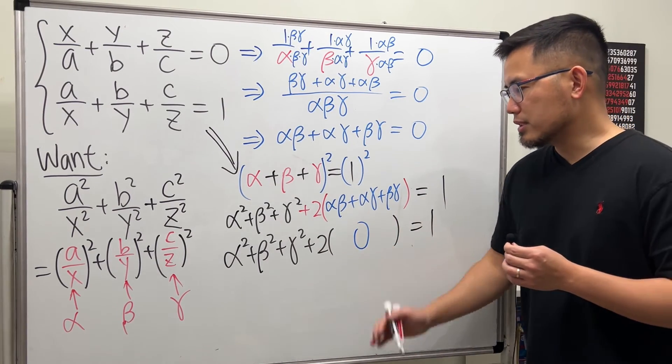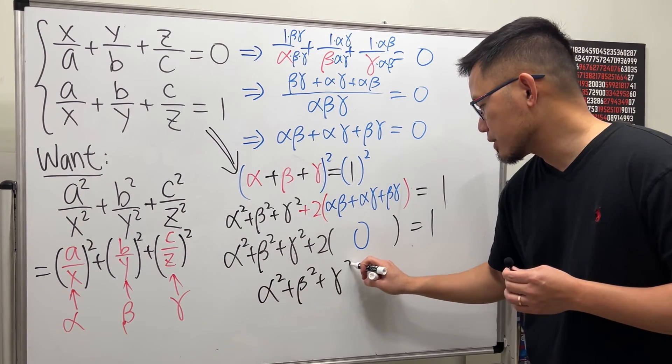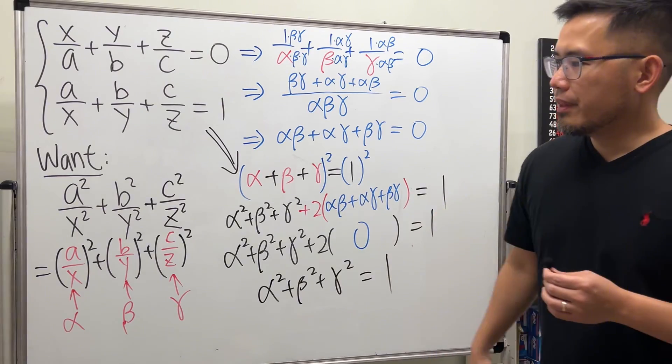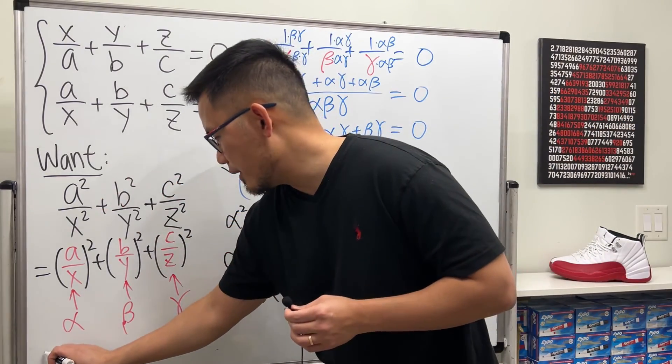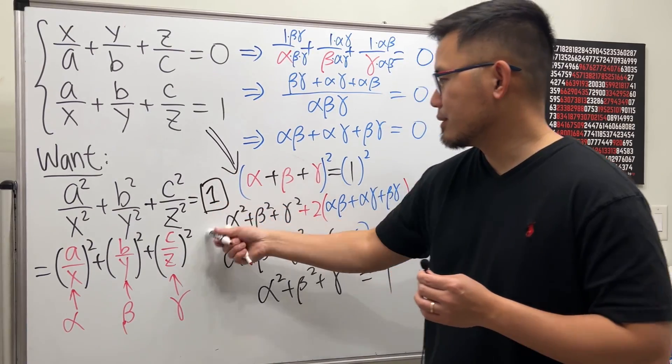Of course two times zero doesn't matter so we just end up with alpha squared plus beta squared plus gamma squared is equal to one. Therefore all this right here the answer is equal to one. So just like that.